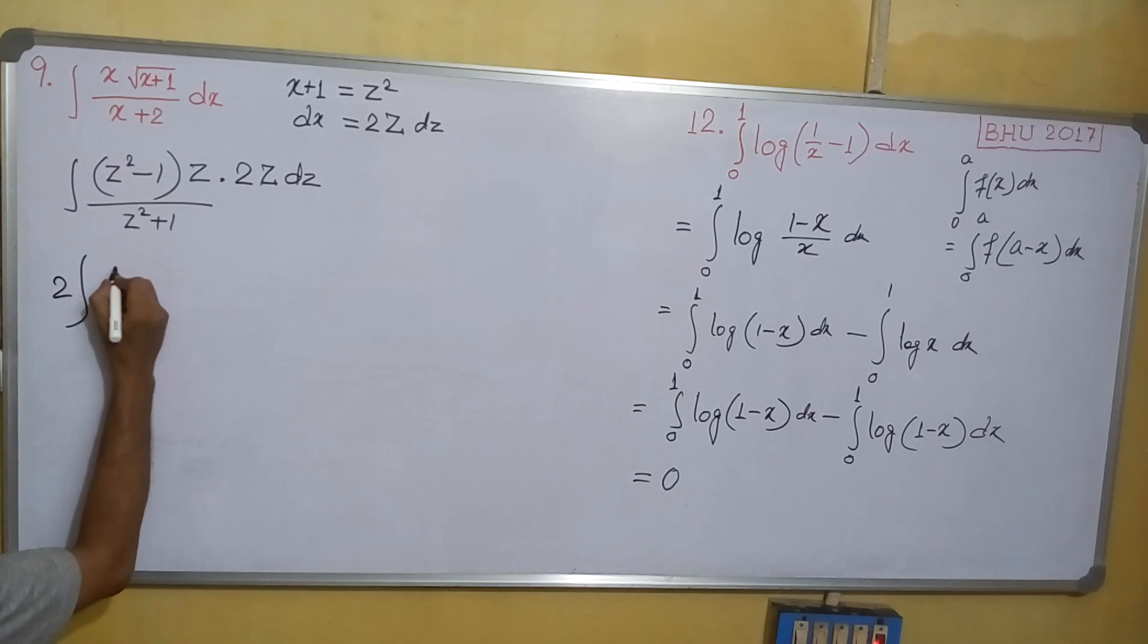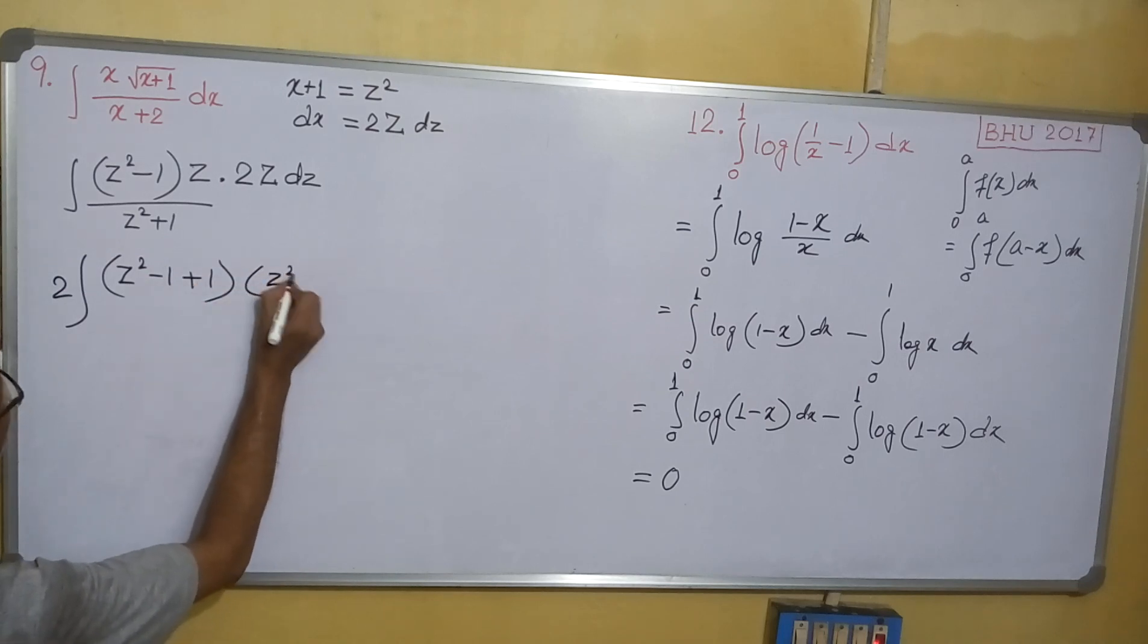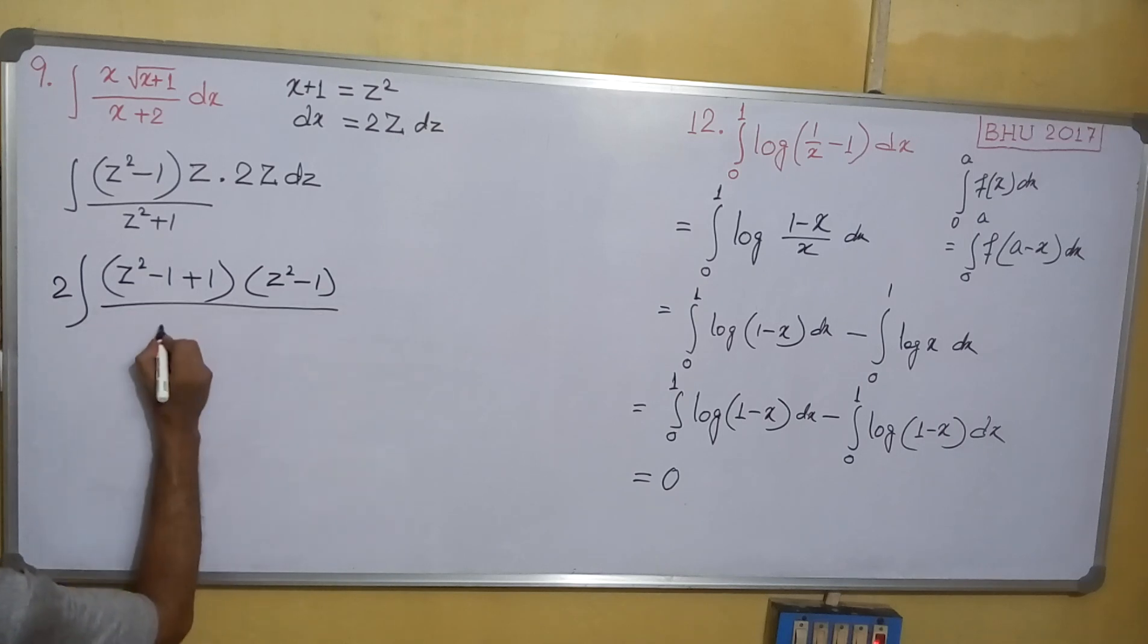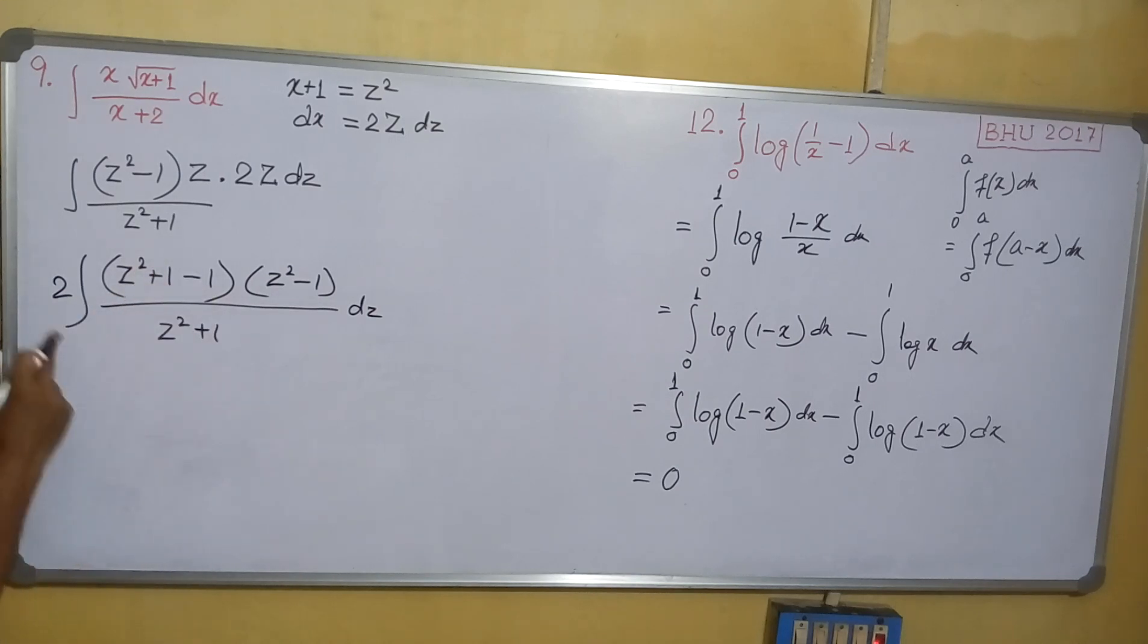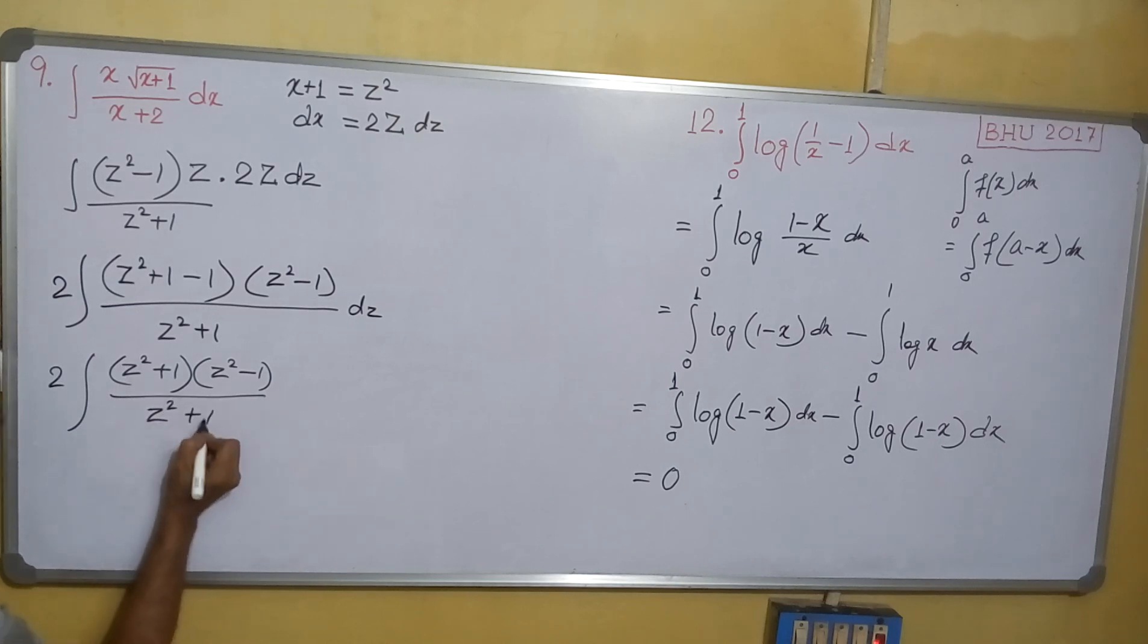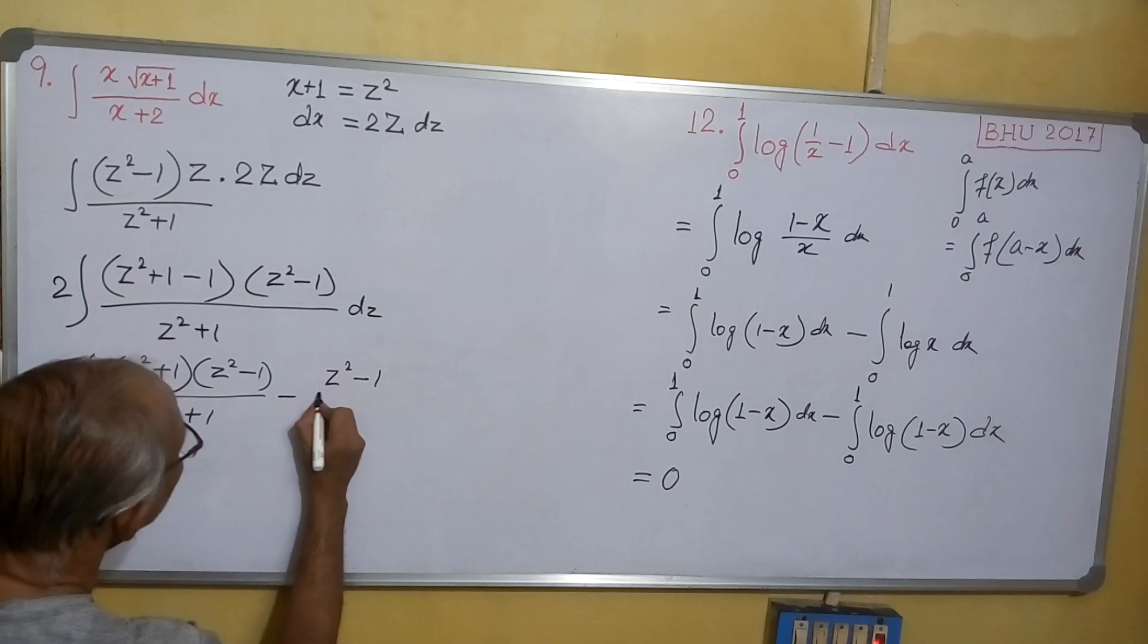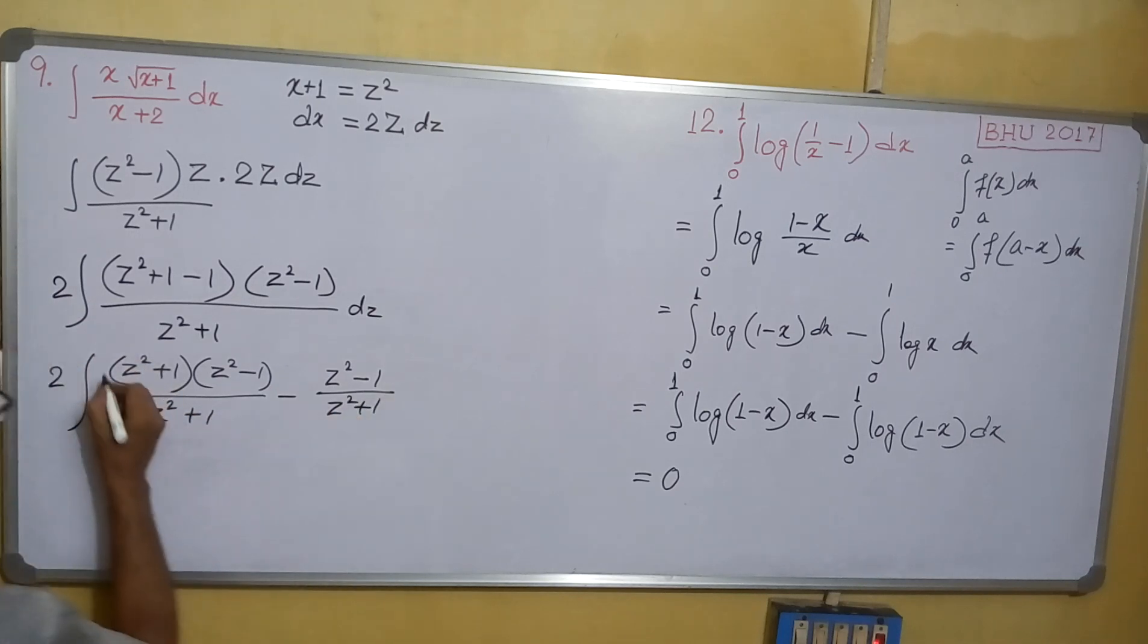This z squared I can write as (z²-1+1) times (z²-1)/(z²+1). I'm writing this as plus 1 minus 1. Then this can be written as 2 times, doing this multiplication: (z²+1)(z²-1)/(z²+1) minus (z²-1)/(z²+1), the whole thing dz.